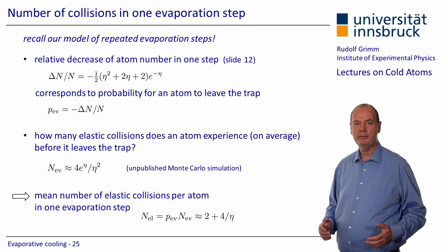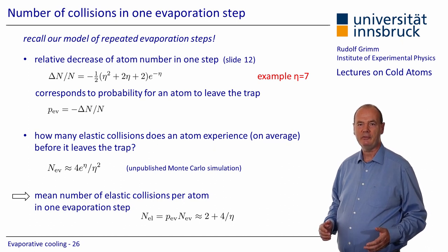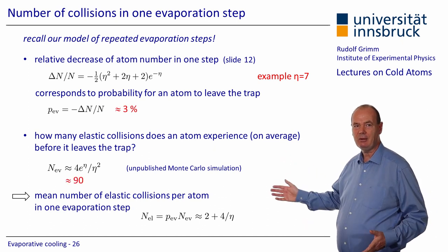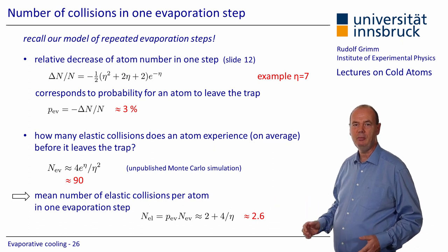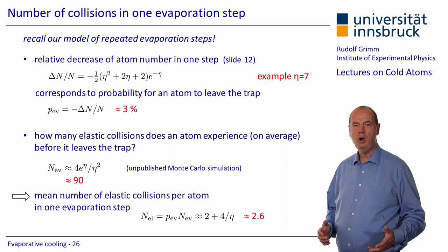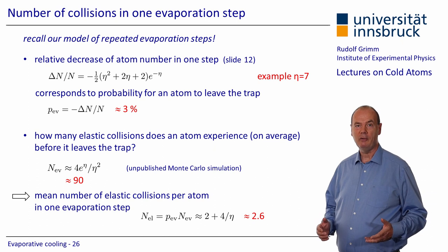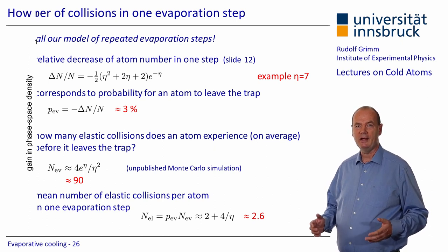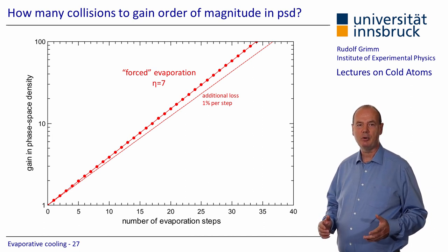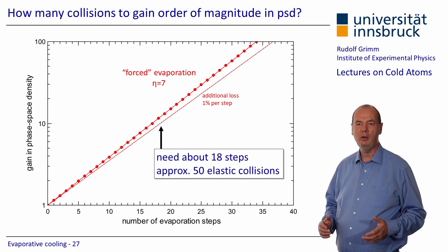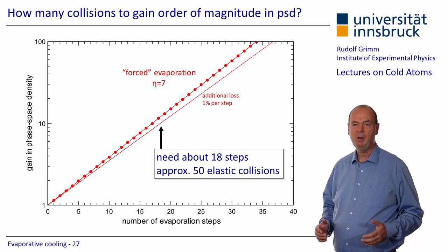Let's now consider realistic numbers assuming eta equals 7. The probability for an atom to leave the trap, corresponding to the relative loss, is then about 3%. With about 90 collisions that an atom experiences on average before leaving the trap, we finally arrive at 2.6 collisions per atom for one evaporation step. Now we know how many collisions we need for one evaporation step. But how many collisions do we need for gaining one order of magnitude in phase space density? On slide 20 we have already seen that, for eta equals 7, we need about 18 evaporation steps. This tells us that we need approximately 50 elastic collisions for gaining one order of magnitude in phase space density. Note that in practice, when things are not ideal, the number may be significantly larger.